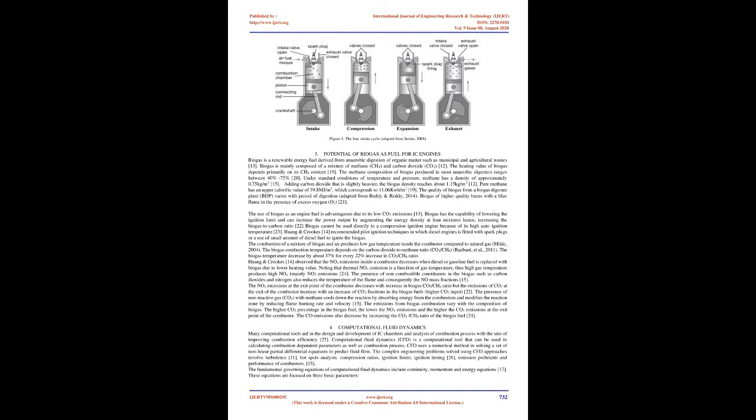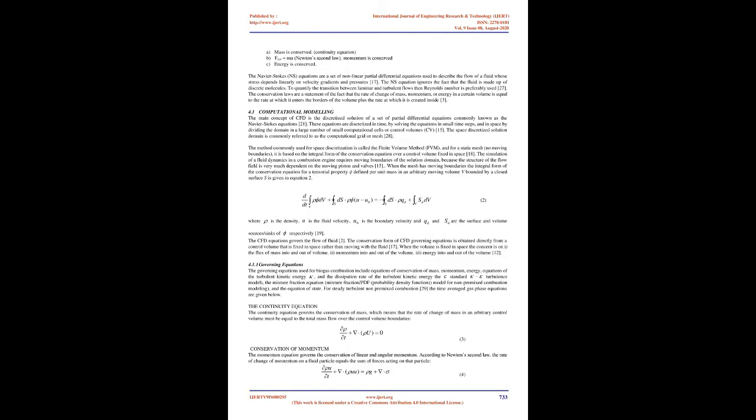Pure methane has an upper calorific value of 39.8 MJ/m³, which corresponds to 11.06 kWh/m³. The quality of biogas from a digester plant varies with the period of digestion. Biogas of higher quality burns with a blue flame in the presence of excess oxygen (O2). The use of biogas as an engine fuel is advantageous due to its low CO2 emissions. Biogas has the capability of lowering the ignition limit and can increase the power output by augmenting the energy density at lean mixtures, thus increasing the biogas-to-carbon ratio. Biogas cannot be used directly in a compression ignition engine because of its high auto-ignition temperature. Huang and Crooks recommended pilot ignition techniques in which diesel engines are fitted with spark plugs or use a small amount of diesel fuel to ignite the biogas.